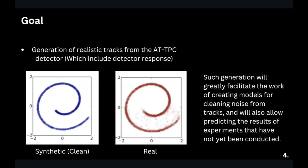The realistic tracks generated by our model can also be used to train another model whose purpose is to remove noise from the point cloud. In the picture on the left you can see a clean synthetic track, but in a real experiment you never have this. In the picture on the right it looks more real, and you need to understand that every real experiment includes a certain amount of noise which is desirable to get rid of.